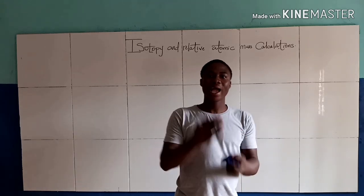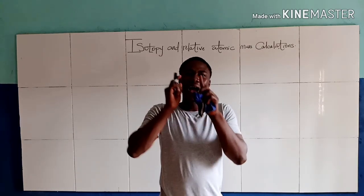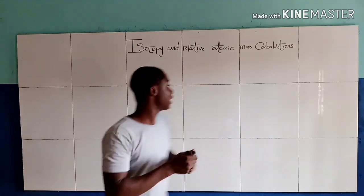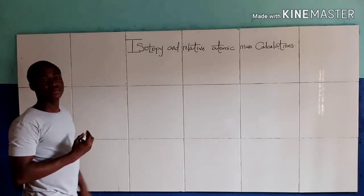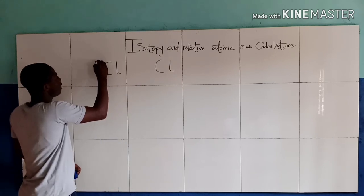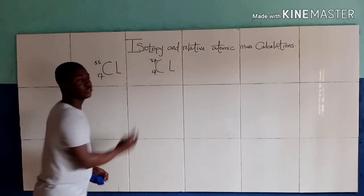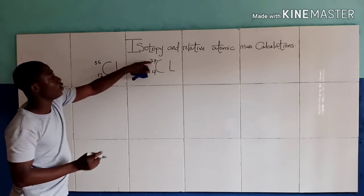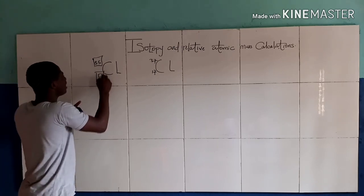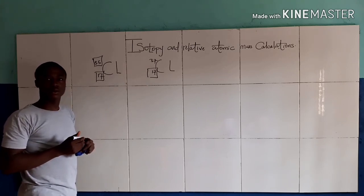What is isotopy? Isotopy is the phenomenon where atoms of the same element have different mass numbers but the same atomic number. For example, chlorine has two isotopes: Chlorine-35 and Chlorine-37. You can see here that the mass numbers of these two isotopes are different, but the atomic number of these two isotopes are the same.